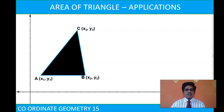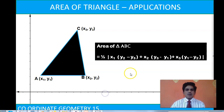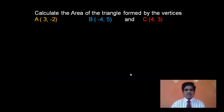Just recollect the formula we learnt in the previous class to calculate the area of the triangle. It is 1/2 times the modulus of x1(y2 - y3) + x2(y3 - y1) + x3(y1 - y2). We will apply this formula to calculate the area of the given triangle.